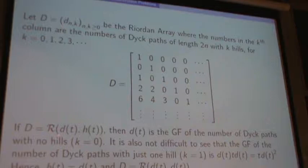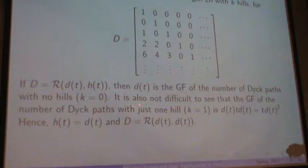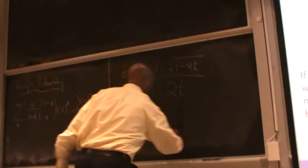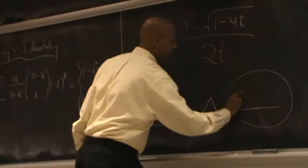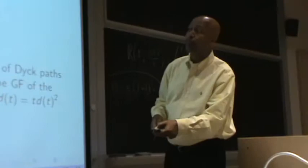If D equals the Riordan array R(D(T), H(T)), then D of T is the generating function for the number of Dyck paths with no peaks. It's also not difficult to see that the generating function for the number of Dyck paths with exactly one peak — K equals 1 — has a typical structure: the peak is here, you have one Dyck path counted by D of T, another Dyck path counted by D of T, and the peak itself counted by T. So the generating function for Dyck paths with exactly one peak is simply T times D of T squared.